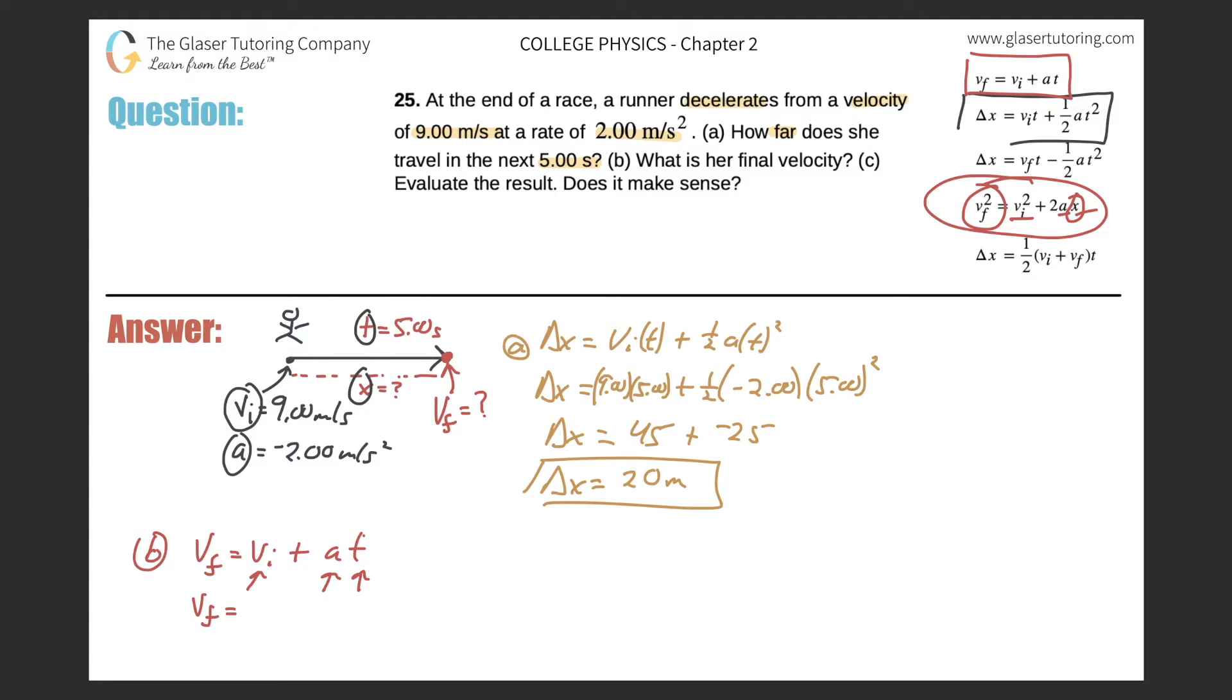So the initial velocity is nine meters per second, right? 9.00. The acceleration was again, negative 2.00. And then the time was five seconds. Okay. So it looks like my final answer should have three significant figures.